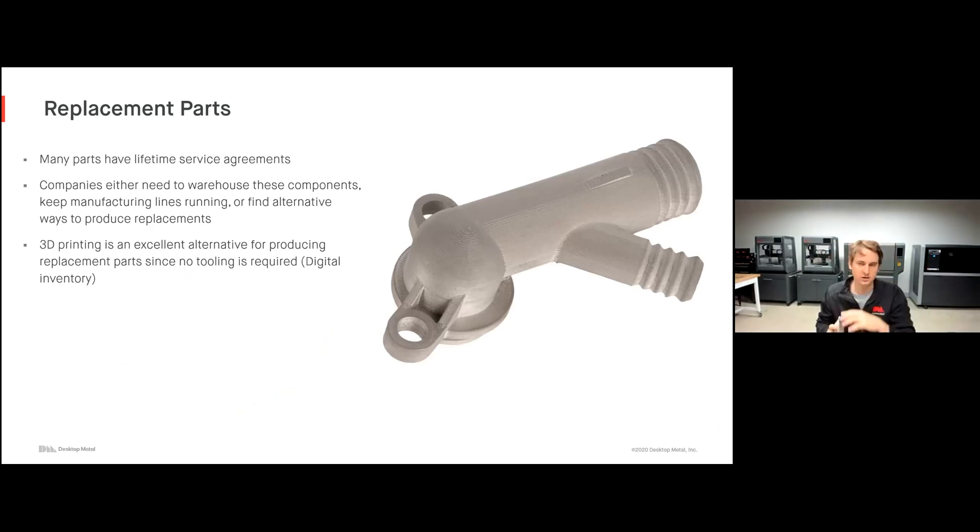Another great example is replacement parts. Many parts today have these lifetime service agreements where you're guaranteeing your customers replacement parts for the entire life that that machine or geometry is in service. So companies either need to warehouse these components or they need to keep manufacturing lines running or they have to look for a new manufacturing alternative so they can ensure that their customers are always having access to these parts. Of course, 3D printing is an excellent alternative because now we're able to do what's called a digital warehouse, a digital inventory. Rather than having to store hard goods and store tooling to potentially make these geometries that we haven't made in many years when a customer needs a replacement, all I have to do is pull a file, throw it on the printer, and in a couple of days I'm ready to send it out to my customer as a replacement part.